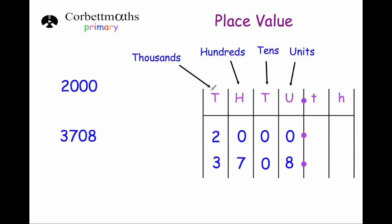Let's have a look at our next column — 1000s. Here we've got 2 numbers: the number 2,000, which has got 2 thousands, no hundreds, no tens and no units. And the number 3,708 has 3 thousands, 7 hundreds, no tens and 8 units.